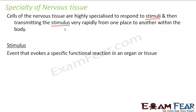All cells inside our body respond to stimulus, but the cells of nervous tissue are highly specialized so that they respond to stimuli very fast and transmit that stimulus rapidly from one place to another. For example, if you touch something very hot with your hand, the cells of the nervous tissue will immediately transmit that stimulus from your hand to the brain. The brain will tell you what to do next. So the nervous tissue not only responds to stimulus, but also transmits it rapidly, and because of this basic nature, the entire nervous system functions.